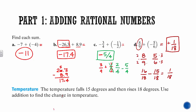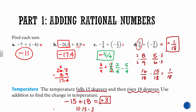Story problem: the temperature falls 15 degrees and then rises 18 degrees — use addition to find the change in temperature. 'Falls 15 degrees' means we use negative 15, and 'rises 18 degrees' means we add positive 18. Our numbers have opposite signs, so the answer will be the sign of the bigger one — positive. 18 minus 15 is 3, so the change in temperature is 3 degrees.